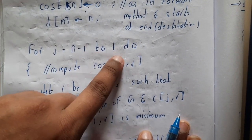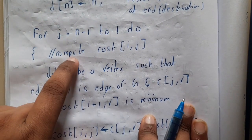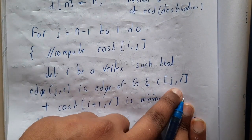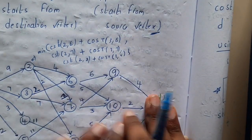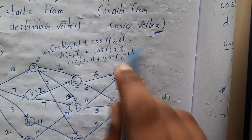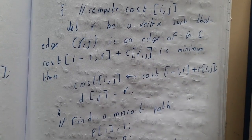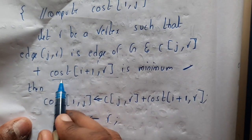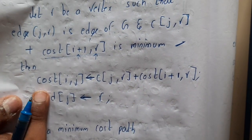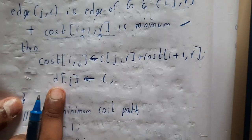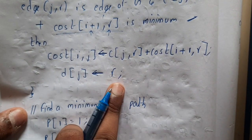From j = N-1 down to 1, compute the cost of C(i, j). Let R be a vertex such that edge(j, R) is an edge of G. This represents the path — for example, when computing from vertex 6 to 9, you find the edge from 6 to 9 then add the cost of 9. So C(j, R) represents the two vertices — cost of 9 to 12 — with respect to stage and node. Then: cost(i, j) = cost(j, R) + cost(i+1, R).